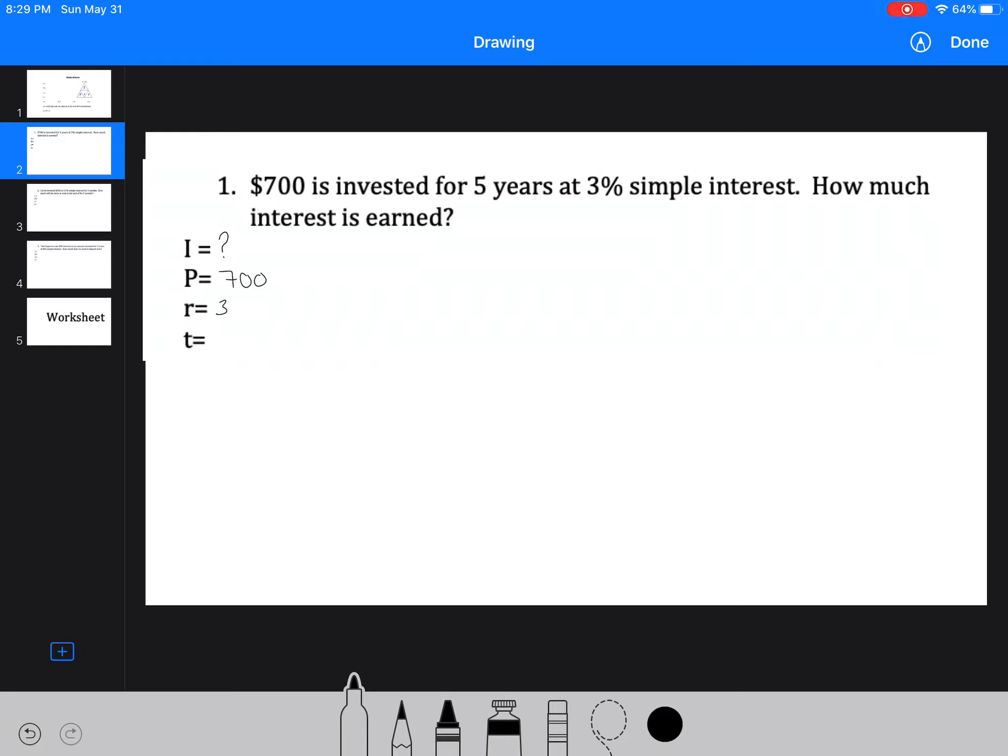Our rate is 3%. Now, we need to always change these into decimals. So we have to divide it by 100, so we get 0.03. And our time is five years. So we simply are going to use the general formula, I equals PRT. We're going to substitute everything in. So we've got 700 times 0.03 times 5. And then we're just going to plug all of that into a calculator, and you're going to get 105.